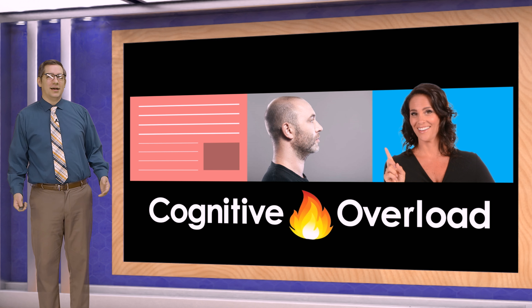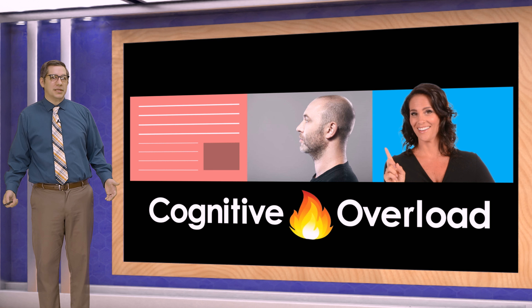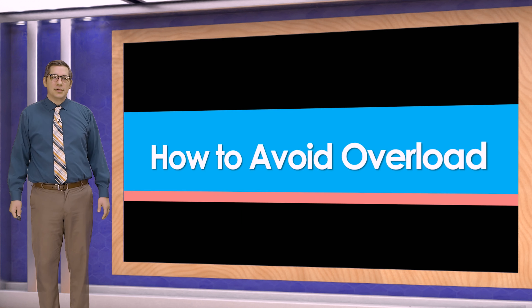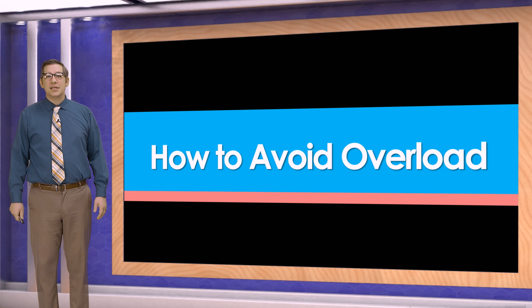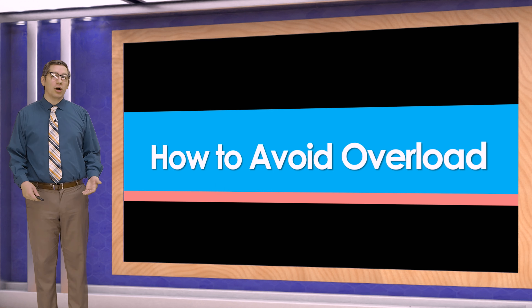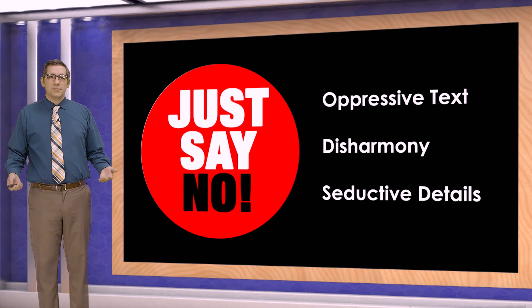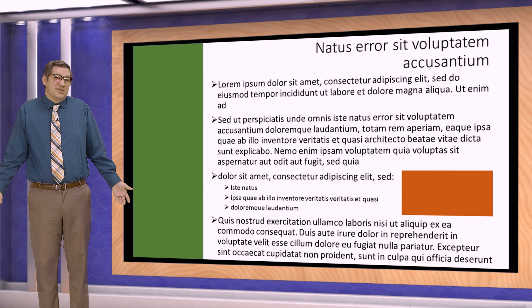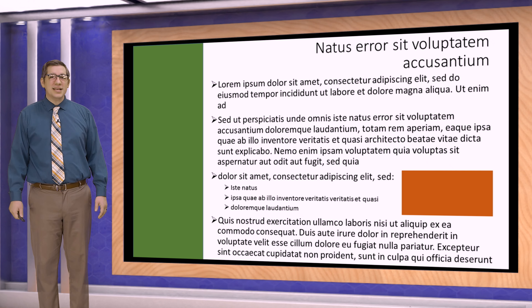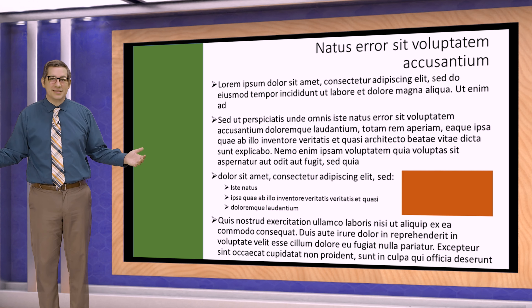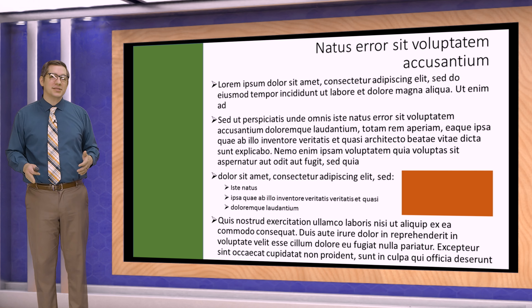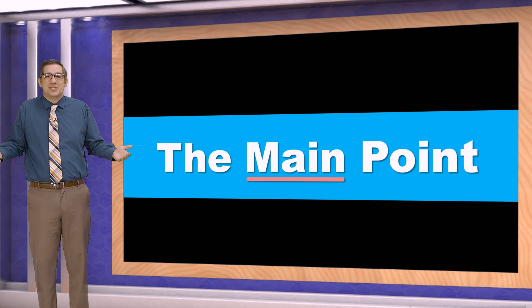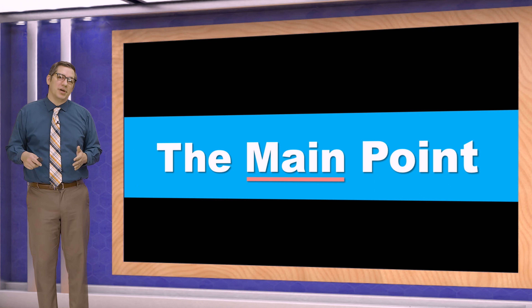We create a situation where someone is thinking: do I look at the presenter and listen to them, or do I look at the slide? We have to train ourselves to just say no to these three things: oppressive text, disharmony, and seductive details. The mere sight of a text-heavy slide is demotivating to your audience — it makes people tired and less willing to stay engaged. Rather than create an overwhelming slide and then gloss over it, just put the main point on the slide and talk over that. Don't think bullet points — think the main point.